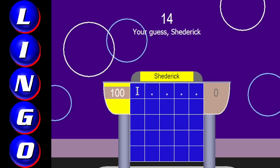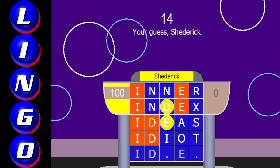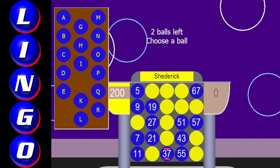And we'll continue on with an I. Inner, I-N-N-E-R. E in the right spot. Index, I-N-D-E-X. D out of place. Ideas, I-D-E-A-S. Got the D. Idiot, I-D-I-O-T. Not it. Last chance for it. Idled, I-D-L-E-D. That is correct. Nicely done. Pulled that out the last second there. Well done. $200 for you. And then 37 for Lingo.